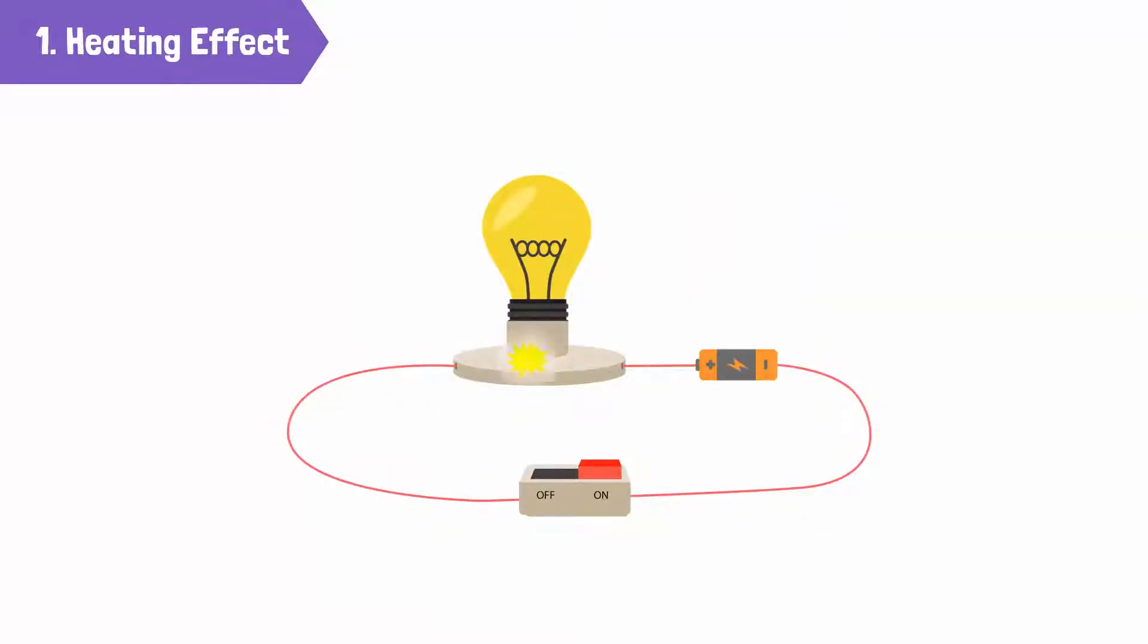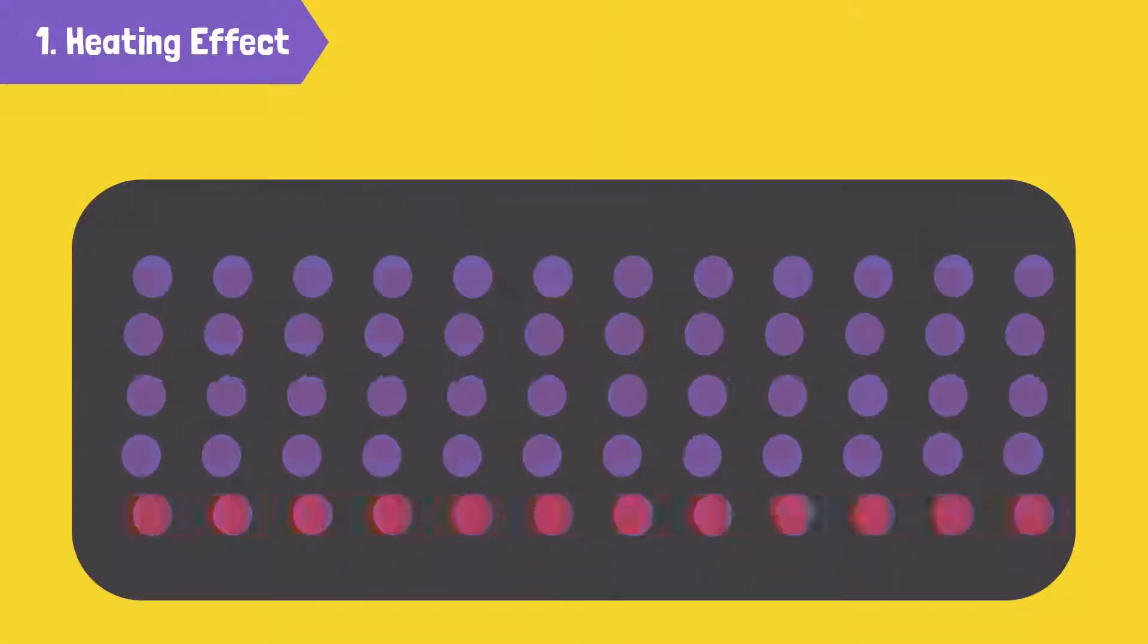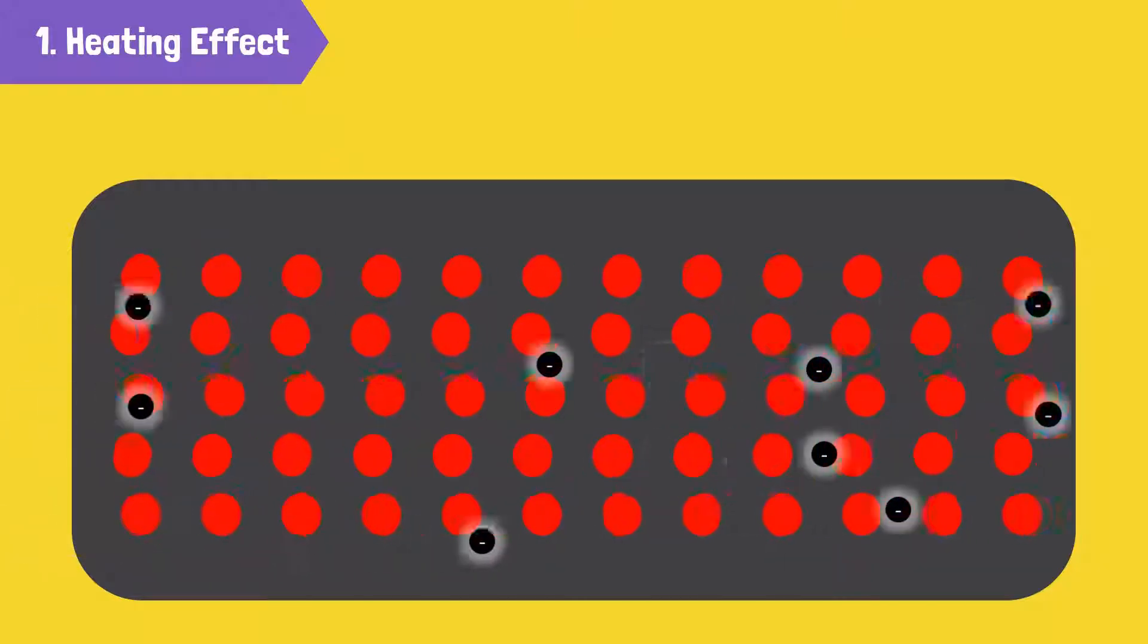When electrons pass through tungsten wire, they give some of their energy to the atoms in the wire. When receiving this energy, the atoms vibrate. It is these vibrations that heat up the wire.